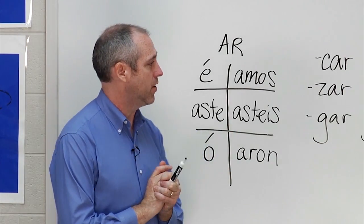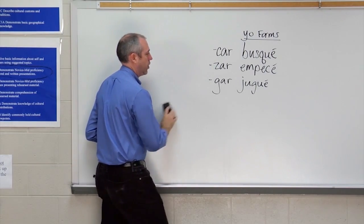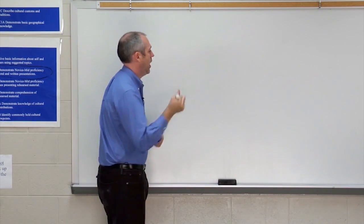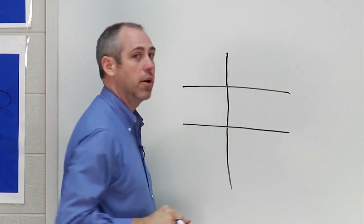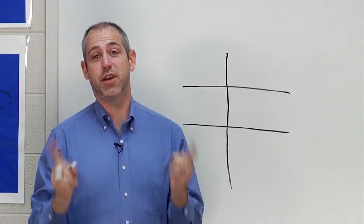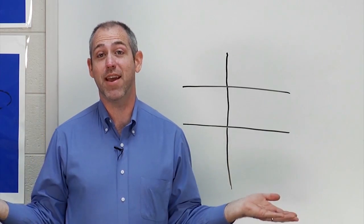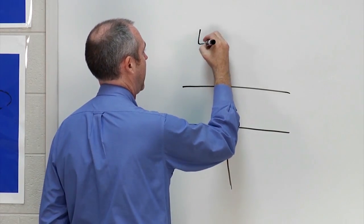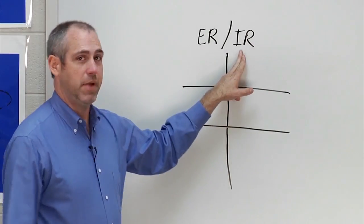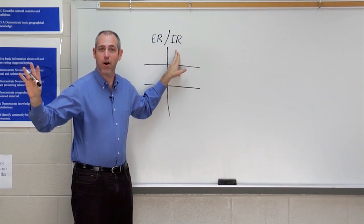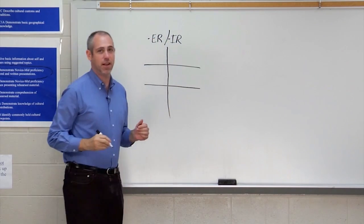With that being said, let's look at ER and IR verbs. Here's good news about the preterite tense: once you learn the ER endings, you automatically have the IR endings because in the preterite they are the same. Just make sure you don't confuse IR — the verb to go — with IR verbs that end in IR. We're talking about verbs that end with IR and verbs that end with ER.